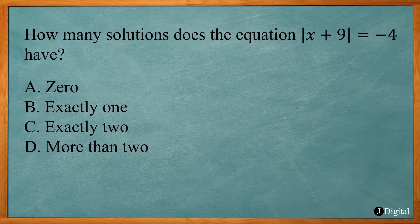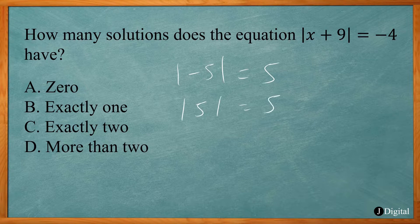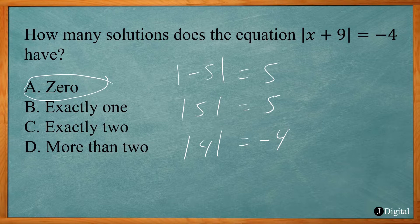Now our fourth example SAT problem says how many solutions does the equation absolute value of x plus 9 equals negative 4 have? What we learned about absolute value is that the absolute value of something is basically going to give you a positive result. There's no case where you get a negative 4. That's impossible. So answer choice A is correct—there's zero solutions. There's no value of x that will make the absolute value of x plus 9 equal negative 4. That result will always be positive.